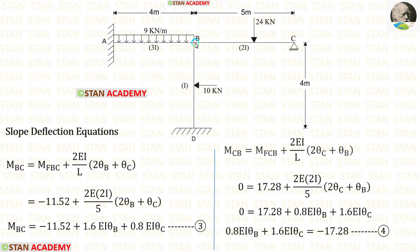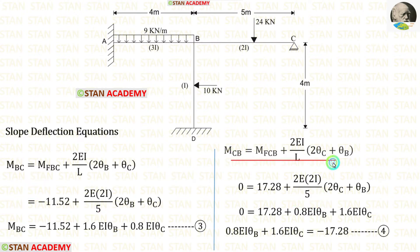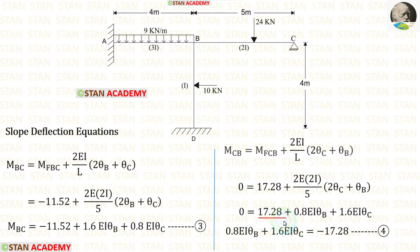Now let us make the slope deflection equations in span BC. We apply the fixed end moments. The moment of inertia for BC is 2i, so we apply 2i instead of I. The length of BC is 5 meters. From this equation we make the first equilibrium equation: since MCB equals zero, we substitute it and move 17.28 to the left side as negative. This is our first equilibrium equation.